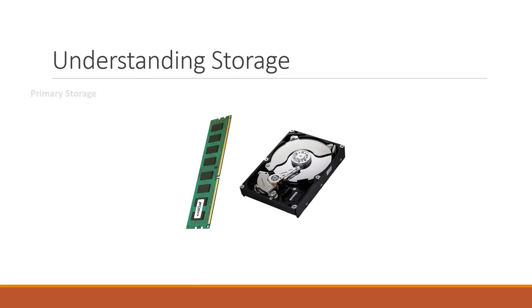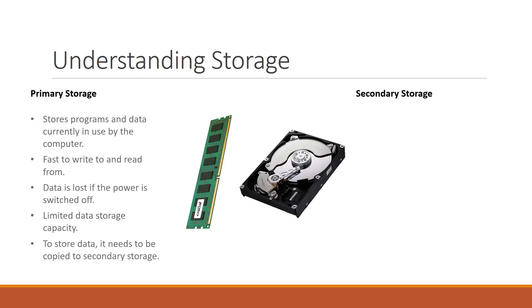So, how does this relate to primary and secondary storage in a computer? A computer's primary storage is used to store programs and data currently in use by the computer, much like short-term memory in a human. Primary memory is fast to read and write to, but loses its data when the power is switched off. By comparison, human short-term memory is fast to access, but loses information quickly.